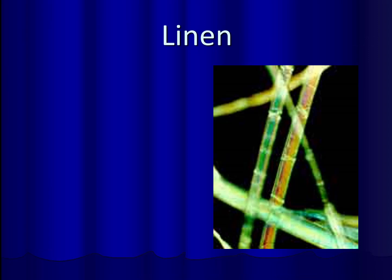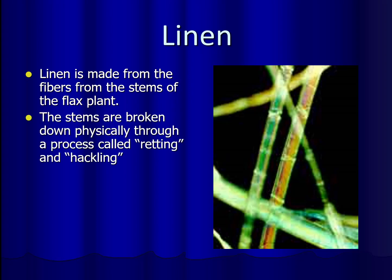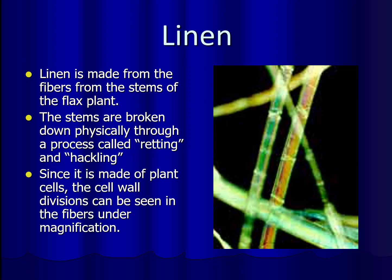Linen is another form of natural fiber. It comes from the fibers in the stems of the flax plant. Under magnification you can actually see the cell walls in the fibers, which makes sense because it comes from plant stems. In order to get linen out of the flax plant it has to go through a pretty complex process involving physical breakdown through retting — which is like rotting — and something called hackling.